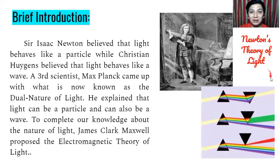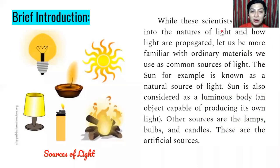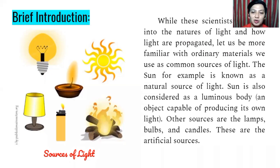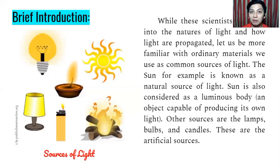While scientists dug deep into the nature of light and how light propagates, let us be more familiar with common sources of light. The sun, for example, is known as the natural source of light — it gives light to the entire world and is also considered a luminous body, an object capable of producing its own light. Other sources are lamps, bulbs, and candles — these are the artificial or man-made sources.